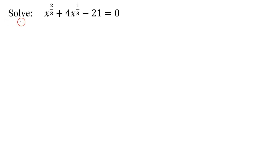In this example, I need to solve the equation x raised to the two-thirds plus four times x raised to the one-third minus 21 equals zero.